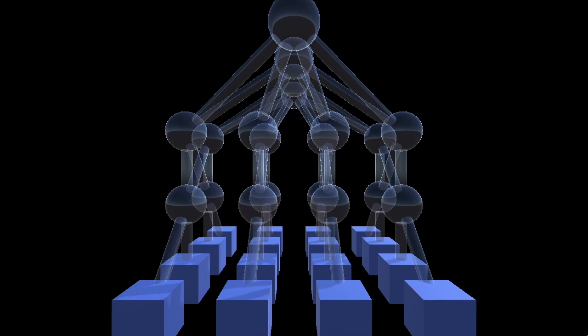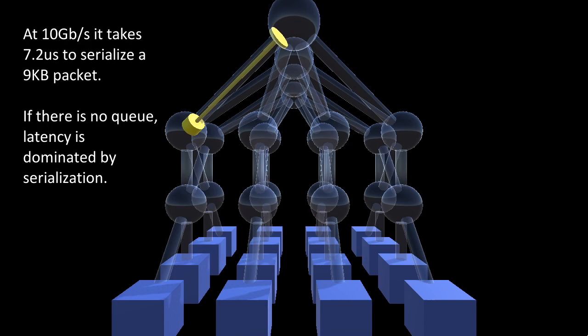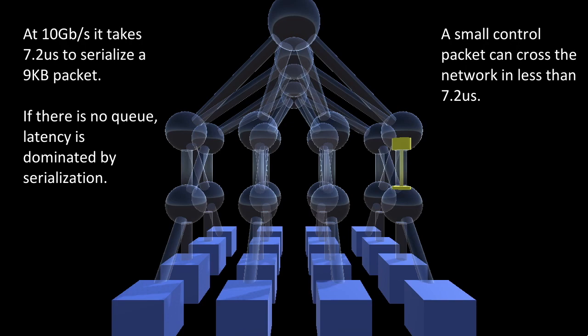A packet traversing a data center network looks more like this. If there's no queuing, serialization dominates the latency. In fact, a small control packet like an ACK can traverse the whole network in the time it takes a data packet to traverse a link. We'll use this property in a moment.